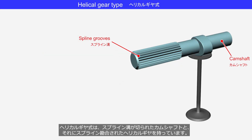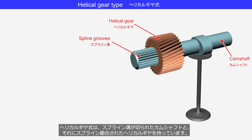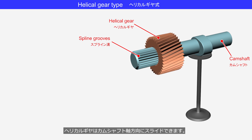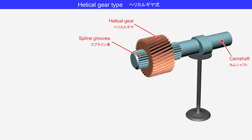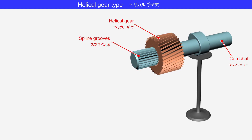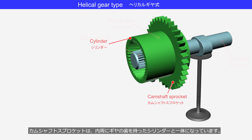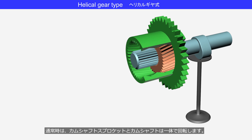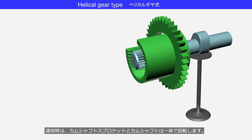The helical gear type has a camshaft with spline grooves and a helical gear that is spline engaged to it. The helical gear can slide in the axial direction of the camshaft, and it rotates together with the camshaft. The camshaft sprocket is integrated with a cylinder that has gear teeth on its inner circumference. Under normal operation, the camshaft sprocket and the camshaft rotate as a single unit.